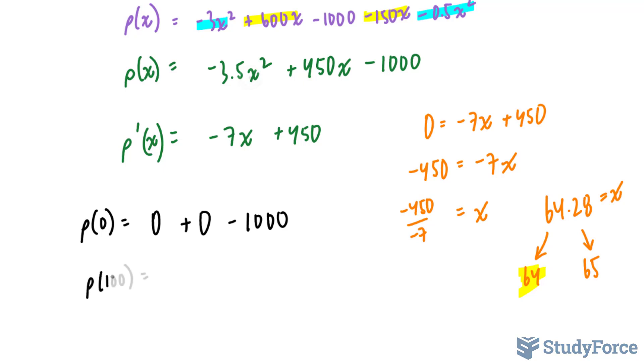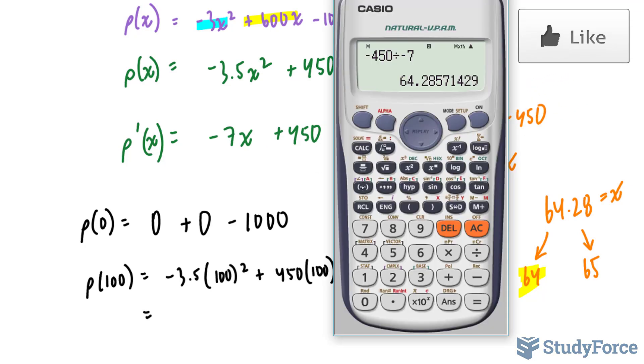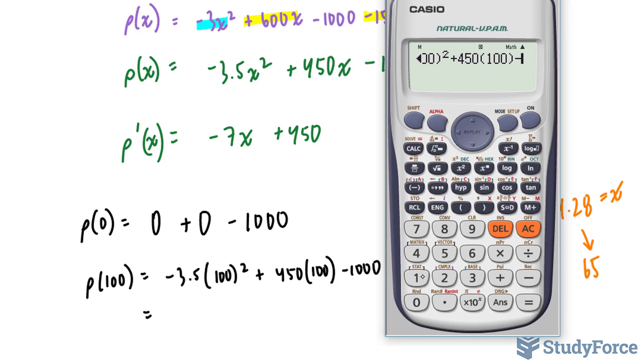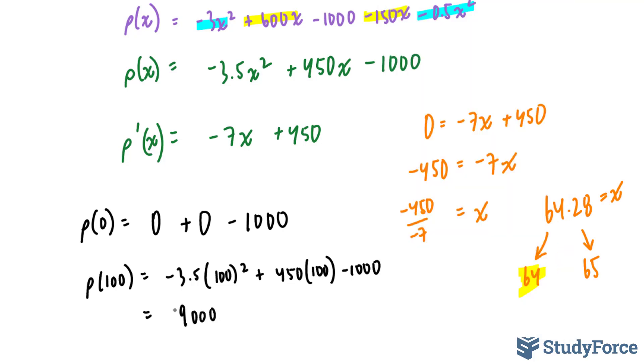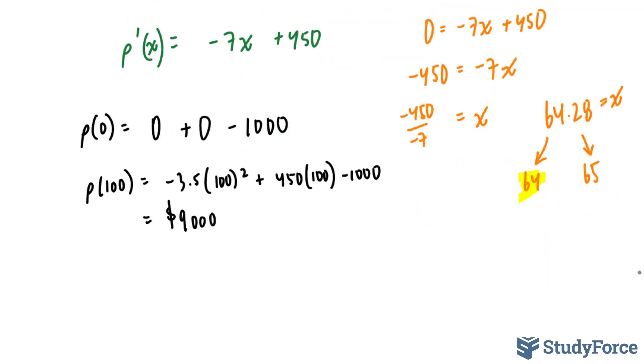Next, we'll try p at 100, inputting 100 into these x values. And next, using our calculator, -3.5 times 100 squared plus 450 times 100 minus 1,000 gives us 9,000. So technically, if this manufacturer produces 100 devices, they make a profit of 9,000. Let's try at 64.